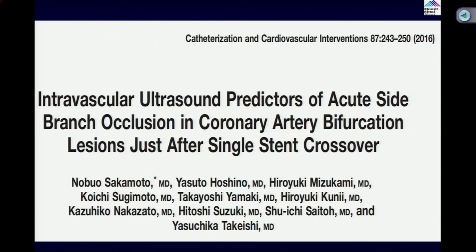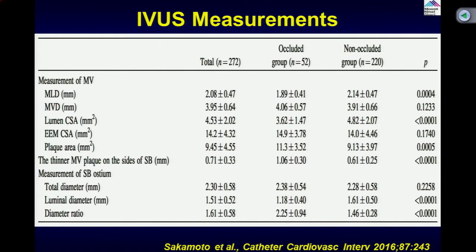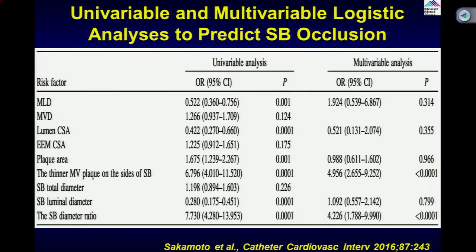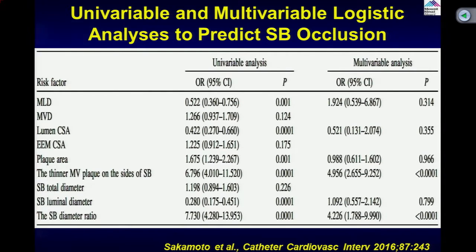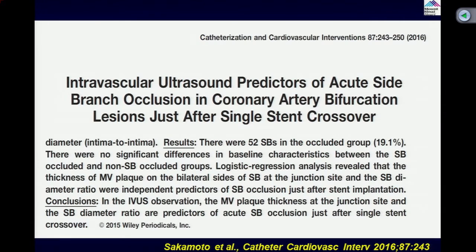The ultrasound predictor is that you have the MLD of the side branch and then the plaque area, as well as the thinner main vessel plaque at the side branch ostium — all are predictive on univariate as well as multivariate analysis. So we have the data on the angiogram and now we have the data on IVUS, both showing that there are factors which you can identify and work proactively.